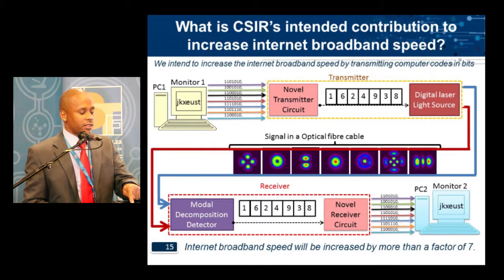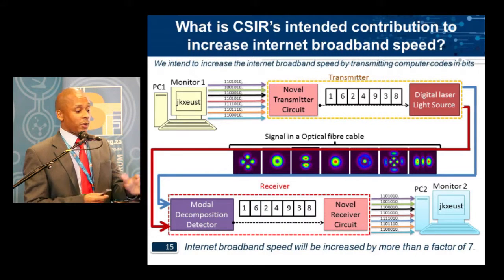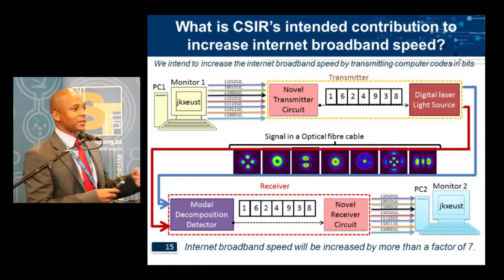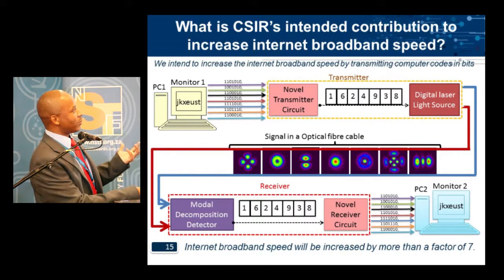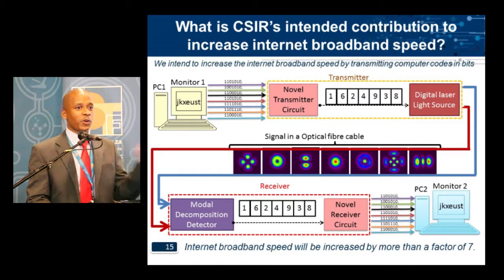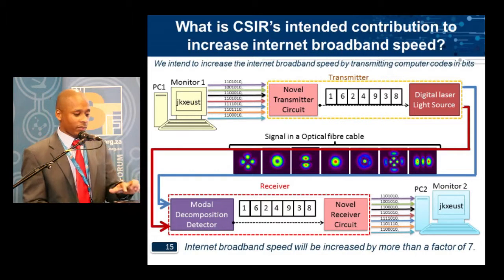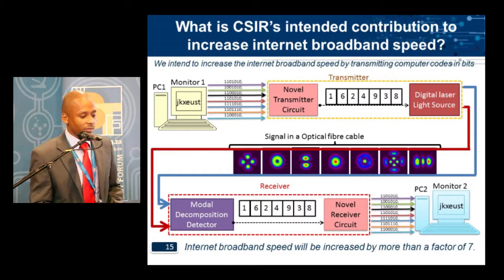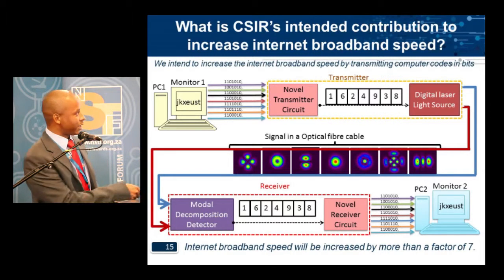We can actually increase the bandwidth, because this approach will automatically increase the bandwidth. We can also add an extra fiber and change the wavelength — from, let's say, one micron to five microns — depending on the intended wavelength, thereby further increasing the bandwidth. This will probably increase the bandwidth by more than a factor of seven, if we can get it to work.